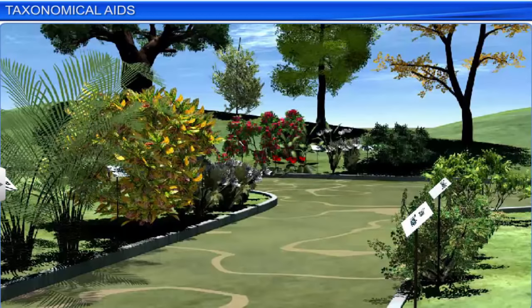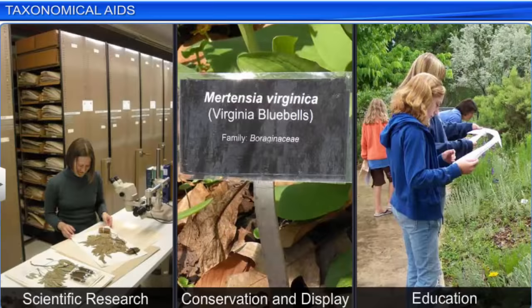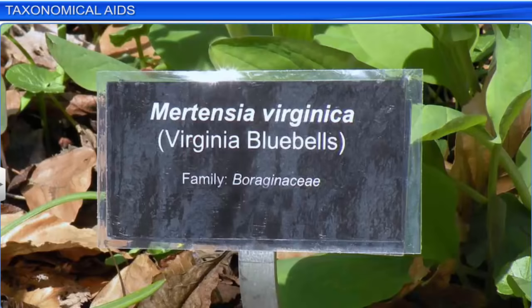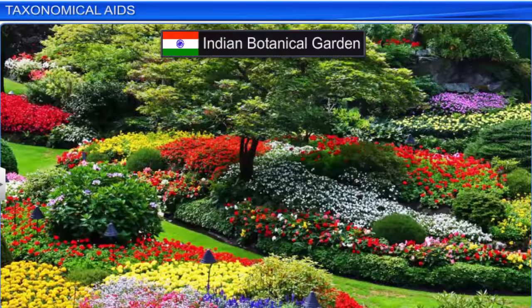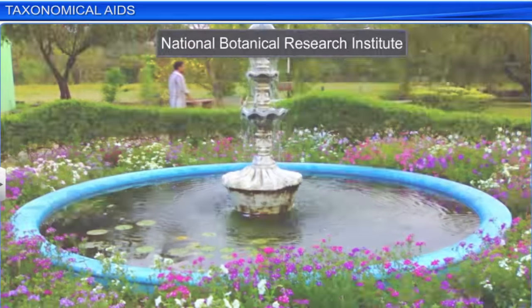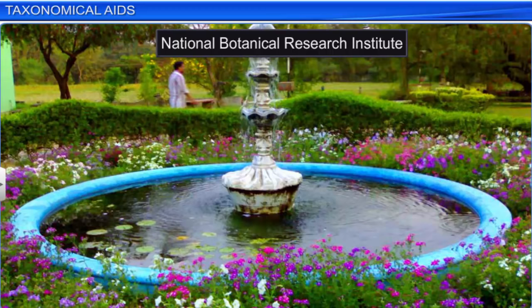Another place that provides taxonomical aid is a botanical garden. A wide variety of plants are cultivated in these gardens for scientific research, conservation, display, and education. Each plant is labeled with its botanical or scientific name and family. Some of the famous botanical gardens are at Kew in England, the Indian Botanical Garden in Howrah, and the National Botanical Research Institute in Lucknow.